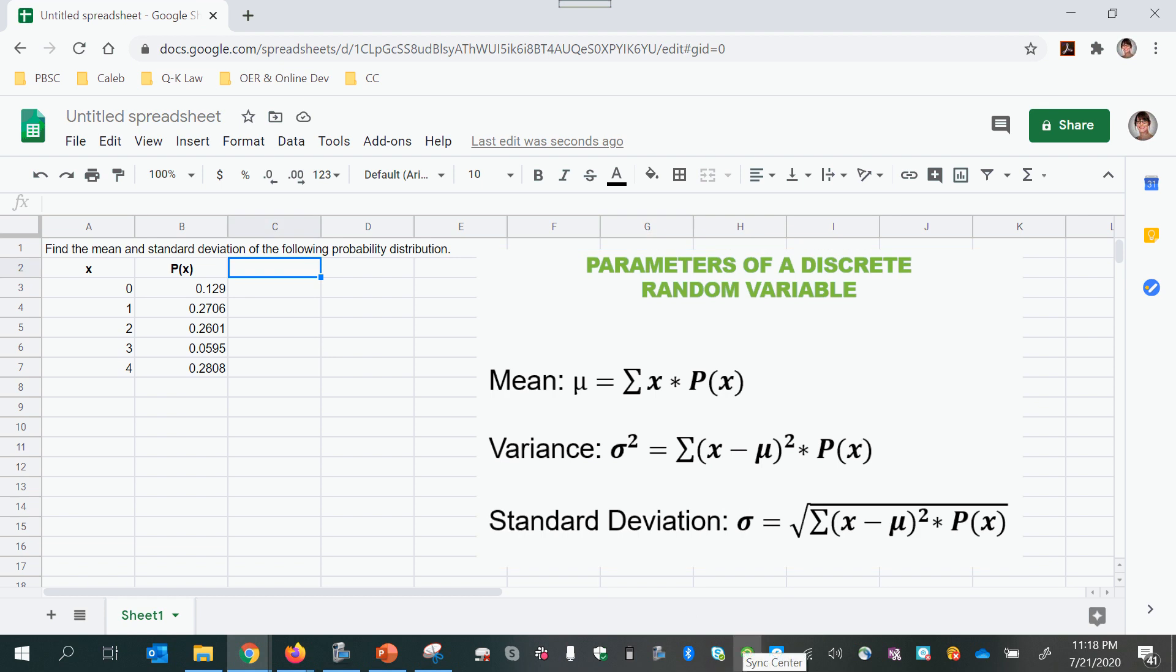So I'm going to begin by calculating the mean. The mean is the sum or the total of the products of each x value times its corresponding probability. So I'm going to make a working column x times p of x.